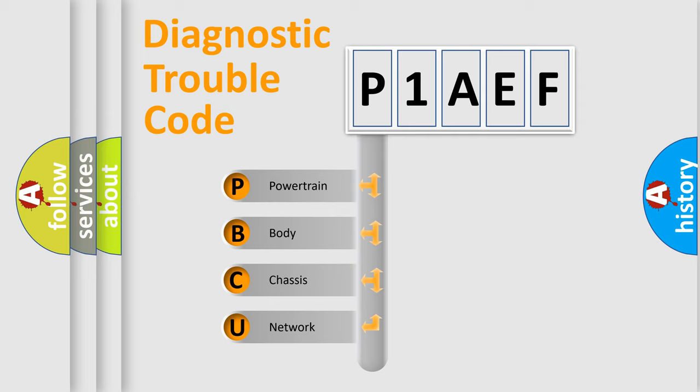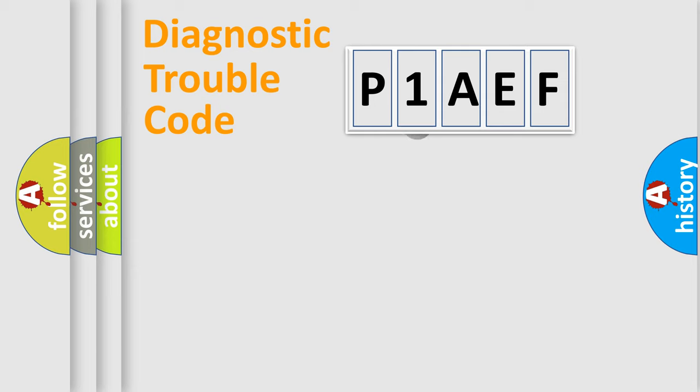We divide the electric system of automobile into four basic units: Powertrain, Body, Chassis, and Network. This distribution is defined in the first character code.